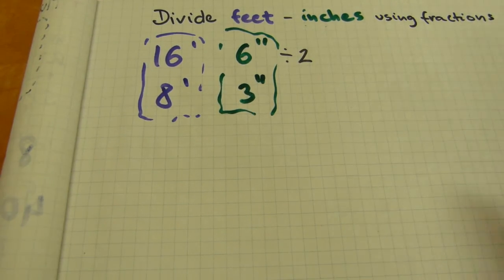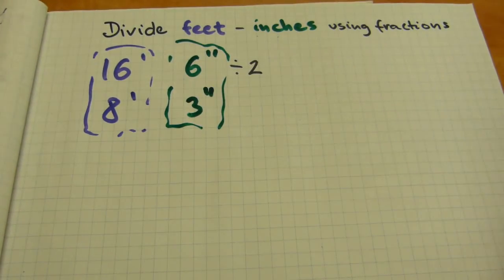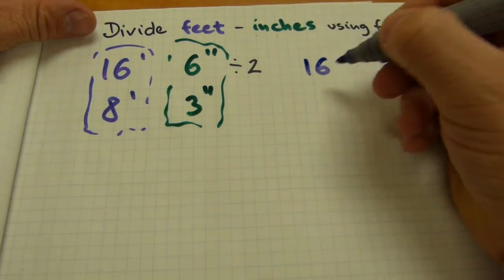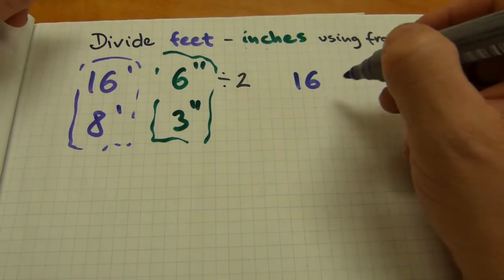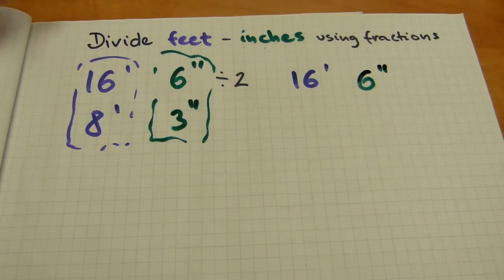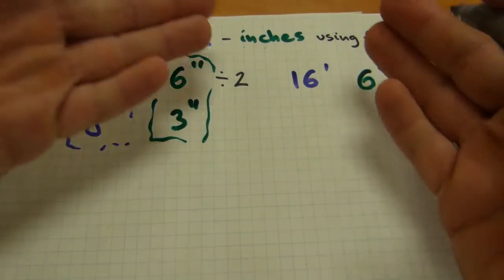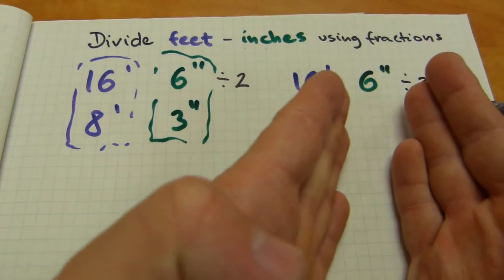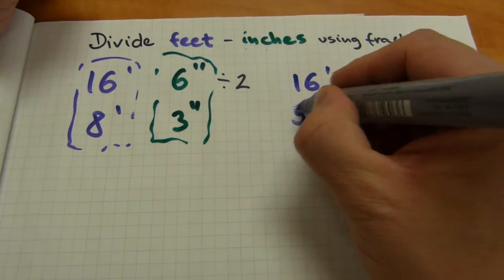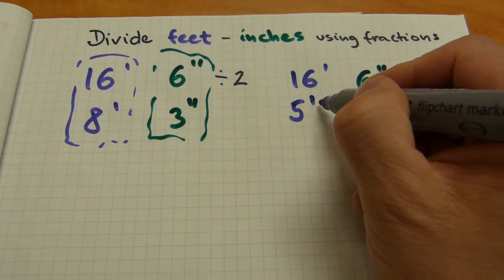The same logic applies to the following calculation. I'm going to keep the same number but we'll divide it by a different number, by 3, because 3 doesn't divide into 16 without a remainder. So 16 feet and 6 inches divided by 3. Let's start with the feet, and the remainder fraction will carry over to the inches.